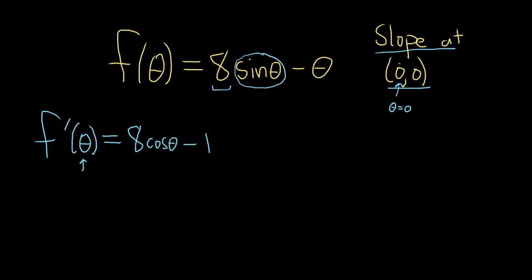So in our problem, it's not x, it's theta, and our theta is 0. So f prime of 0 is equal to 8 cosine 0 minus 1. So cosine of 0 is 1, so we get 8 times 1 minus 1, so we get 7.